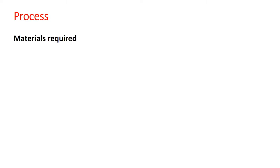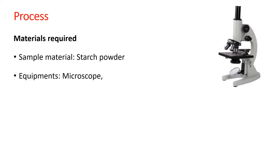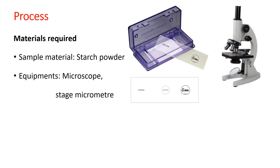Now we will discuss how to proceed with this experiment. The materials required include the sample — such as starch, a prepared formulation, or calcium oxalate crystals. The major equipment required is a microscope and a stage micrometer. The stage micrometer is a simple slide with a circle at the center that has been etched with a microscopic scale.